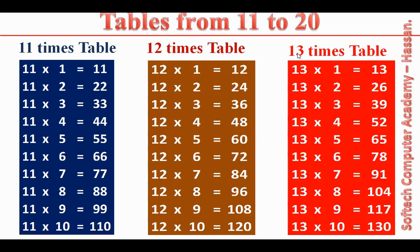13 times table. 13 ones are 13. 13 twos are 26. 13 threes are 39. 13 fours are 52. 13 fives are 65. 13 sixes are 78. 13 sevens are 91. 13 eights are 104. 13 nines are 117. 13 tens are 130.